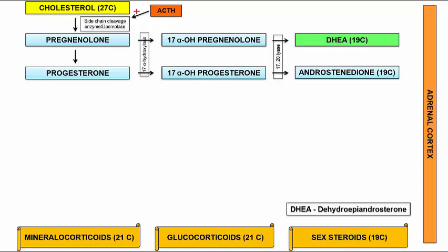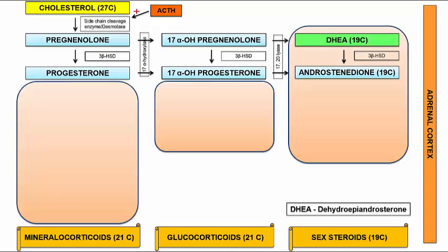Moving vertically downwards, the conversion of pregnenolone to progesterone, 17-alpha hydroxypregnenolone to 17-alpha hydroxyprogesterone, and DHEA to androstenedione are all catalyzed by the same enzyme: 3-beta hydroxysteroid dehydrogenase (3β-HSD).